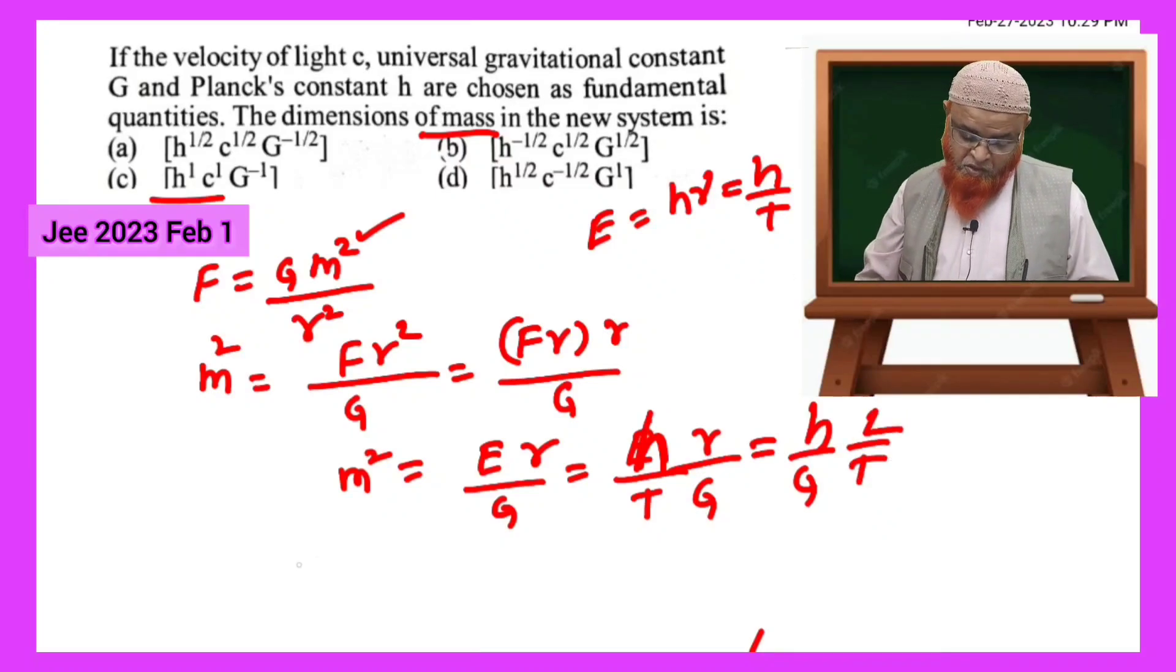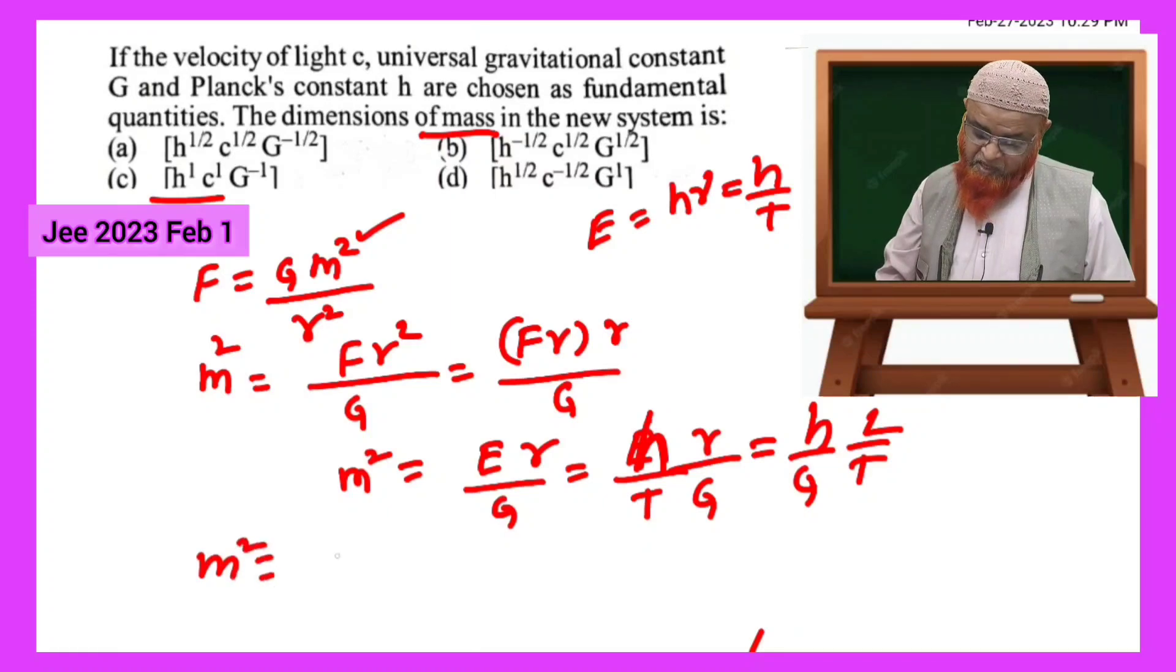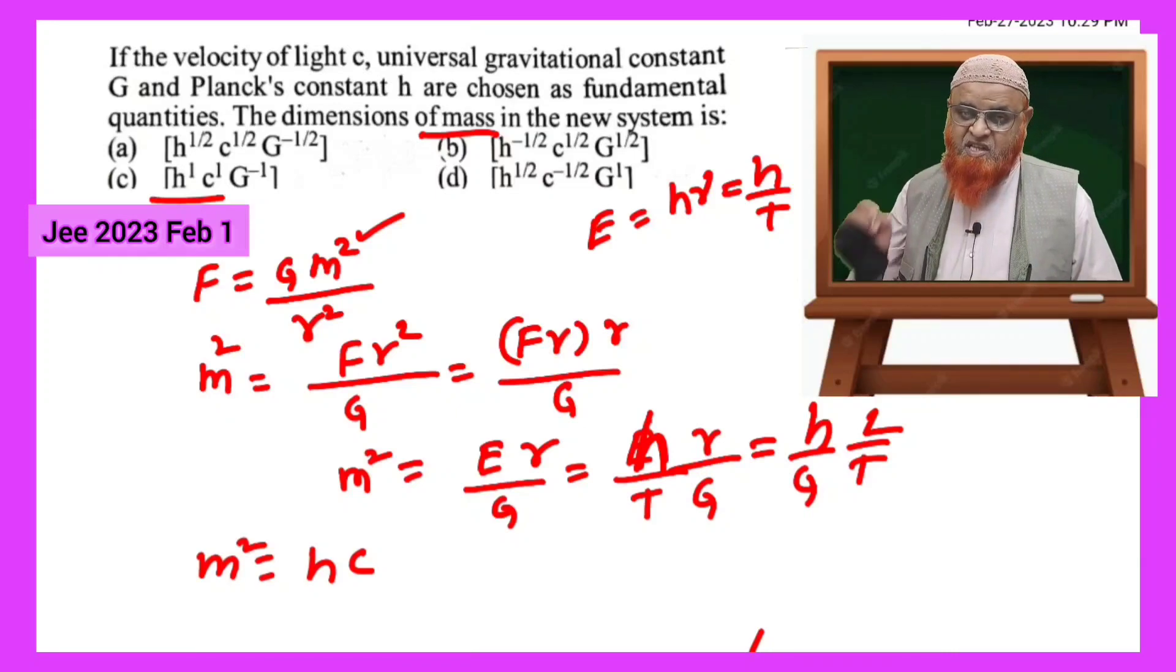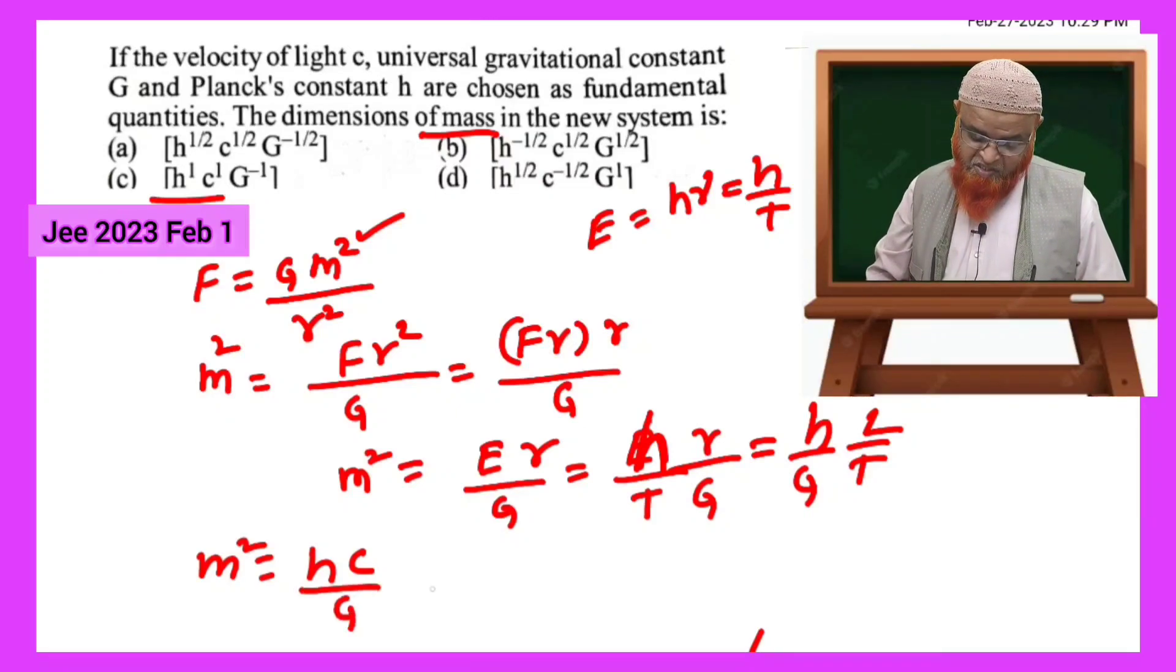So we can write this as m squared is equal to h by G, h c. Displacement by time is nothing but velocity. You can take velocity of light c by G here, so this can be taken as h c G power minus 1.